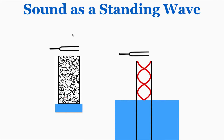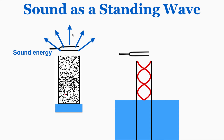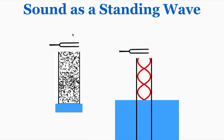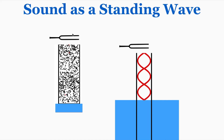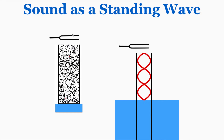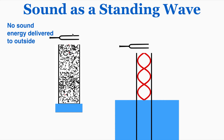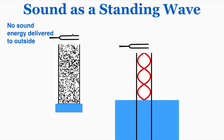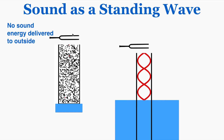Moving up to another antinode, we can very clearly hear the sound again, because this is where the most sound energy is being delivered to outside of the tube. At another node of the standing wave, there is no sound energy being delivered outside — that's why that sound pattern emerges as we raise the tube out of the water.